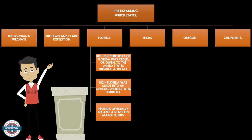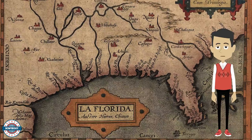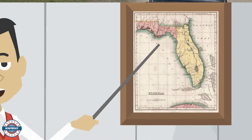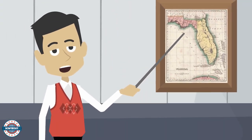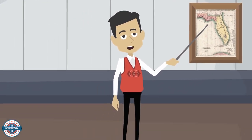How did Florida join the United States? In 1819, the territory of Florida was ceded, or given, to the United States through a treaty. In 1821, Florida was made into an official United States territory. Florida officially became a state on March 3rd of 1845.